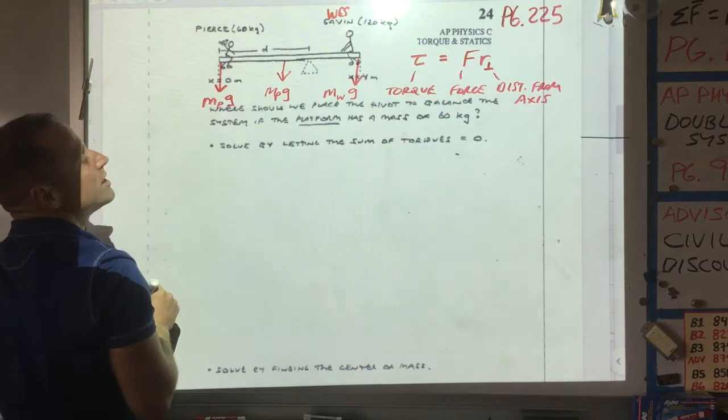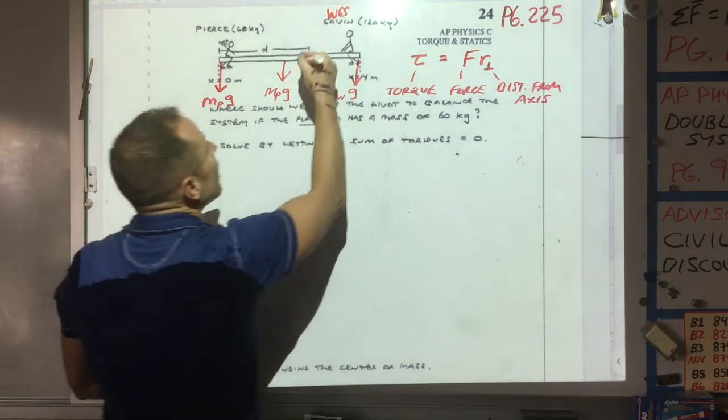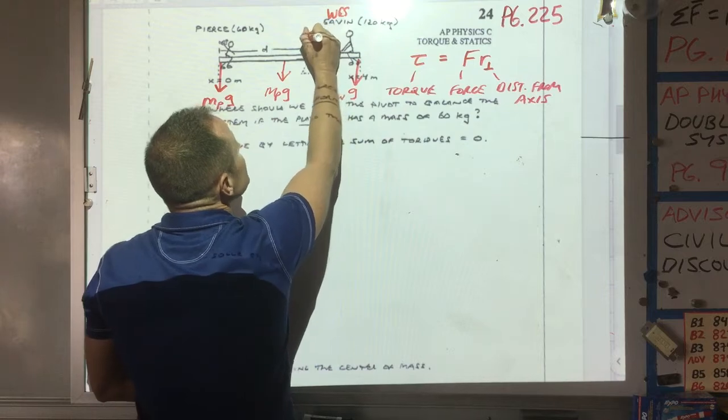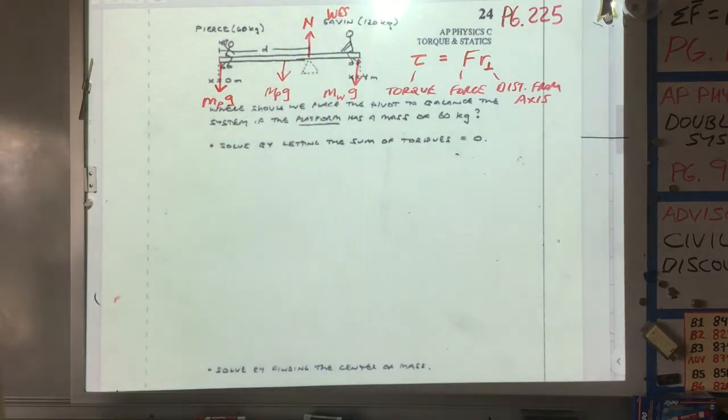So those are three downward forces. And then pushing up would be a normal force from this pivot, wherever we decide to put the pivot.